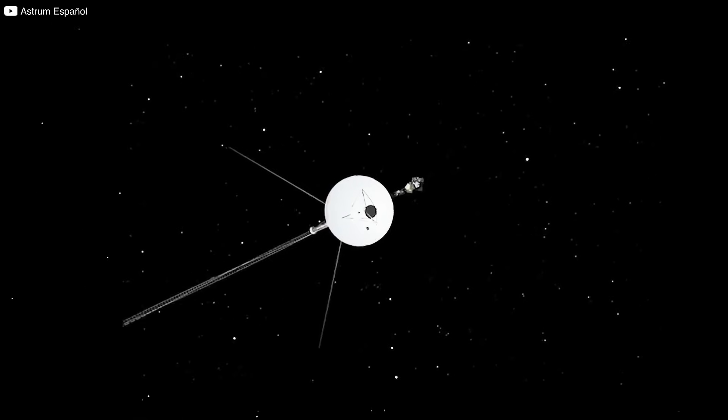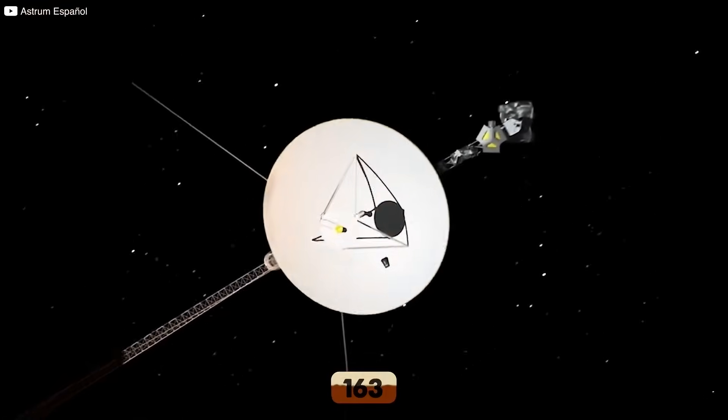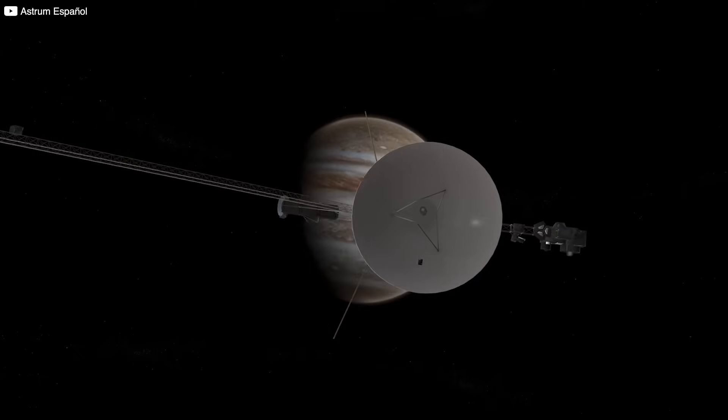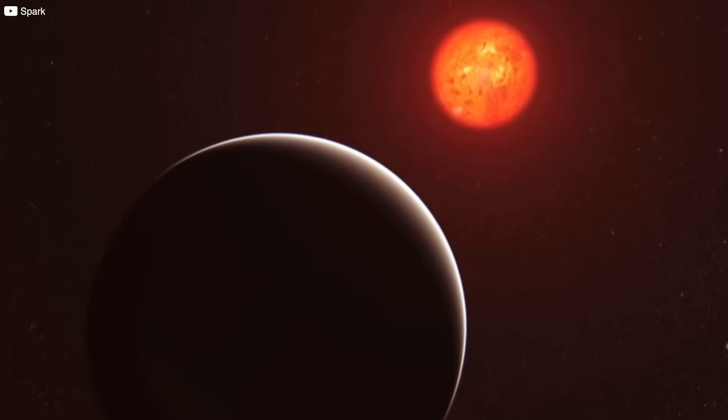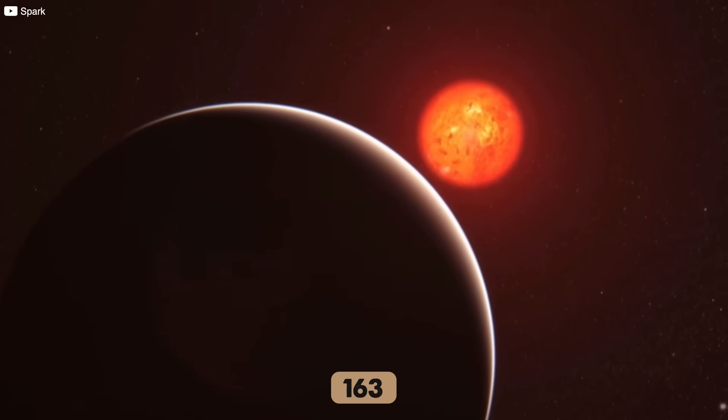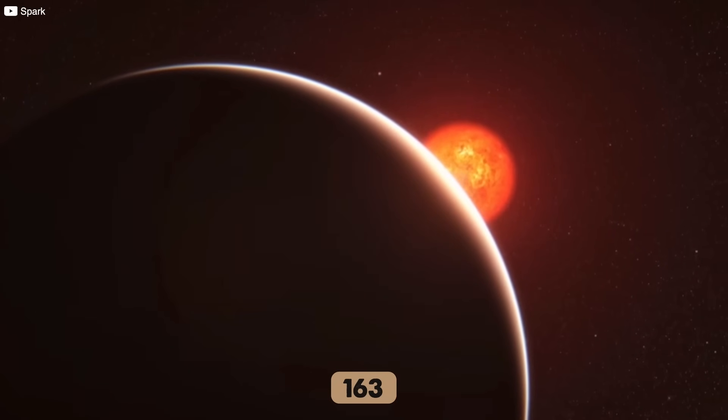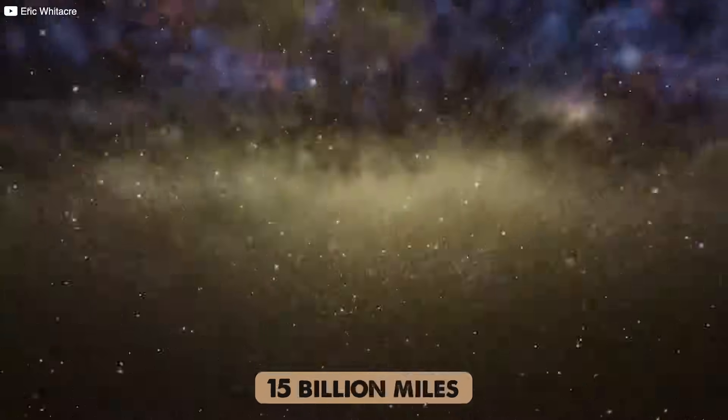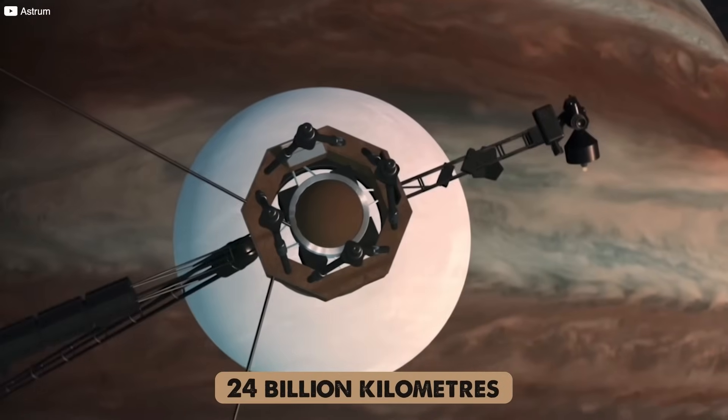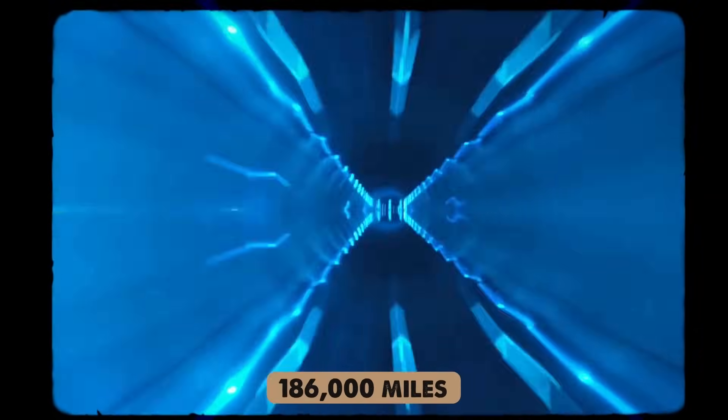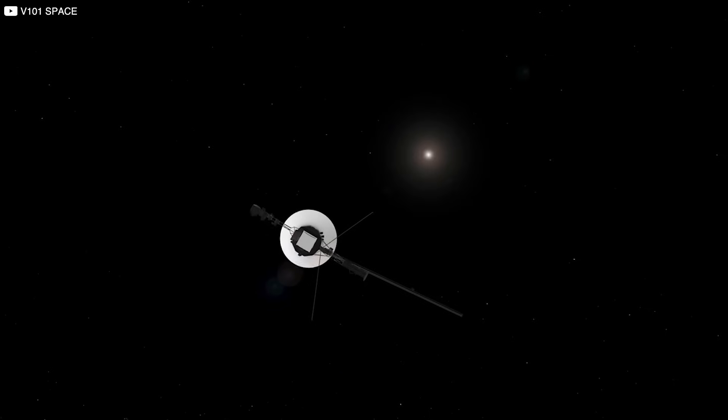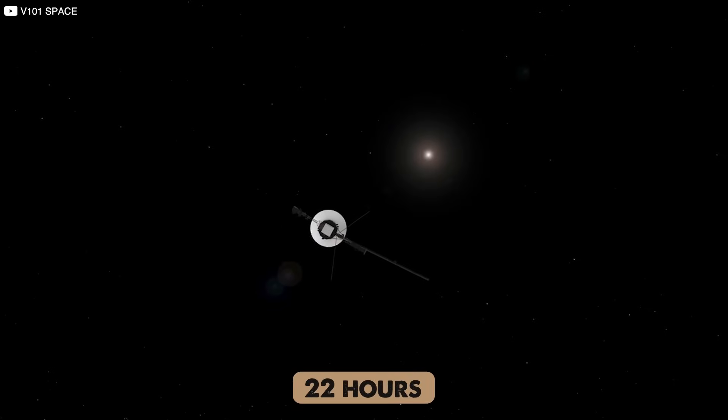Today, Voyager 1 drifts over 163 astronomical units, AU, from Earth. That's 163 times the distance between Earth and the Sun, roughly 15 billion miles, or 24 billion kilometers. Even light, racing at 186,000 miles per second, takes more than 22 hours to bridge that gap.